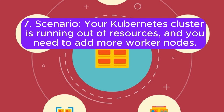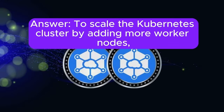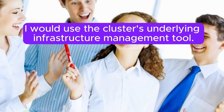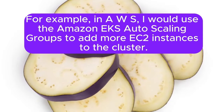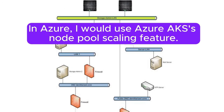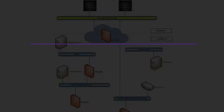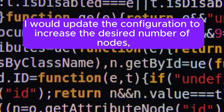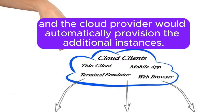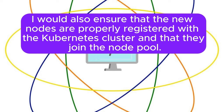Scenario 7: Your Kubernetes cluster is running out of resources, and you need to add more worker nodes. How would you scale the cluster? Answer: To scale the Kubernetes cluster by adding more worker nodes, I would use the cluster's underlying infrastructure management tool. In AWS, I would use Amazon EKS auto-scaling groups to add more EC2 instances. In Azure, I would use AKS's node pool scaling feature. I would update the configuration to increase the desired number of nodes, and the cloud provider would automatically provision additional instances. I would ensure that new nodes are properly registered with the cluster.